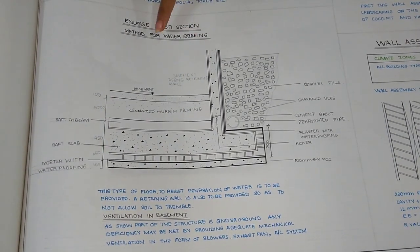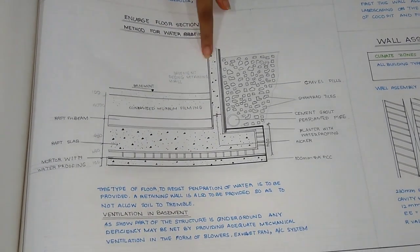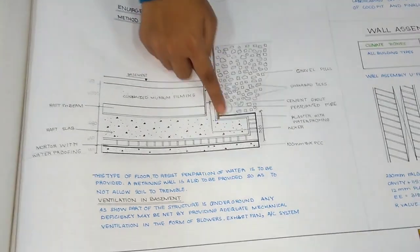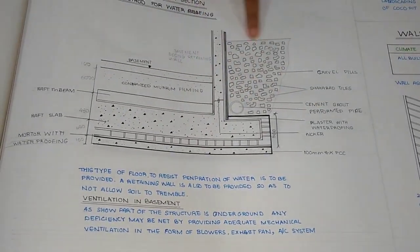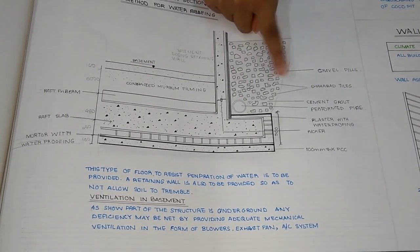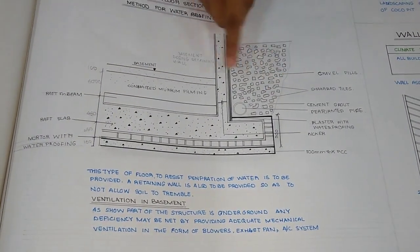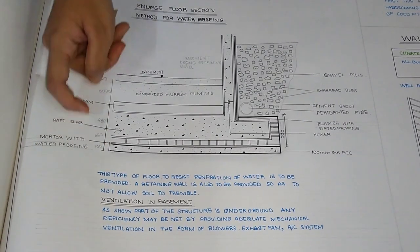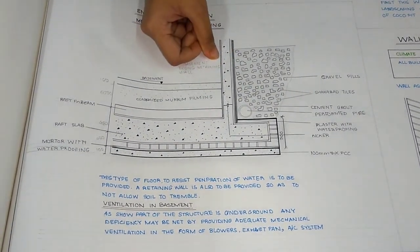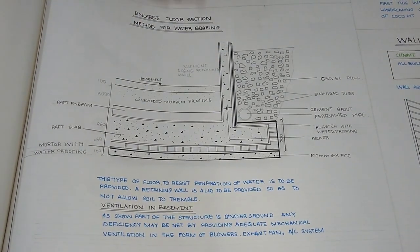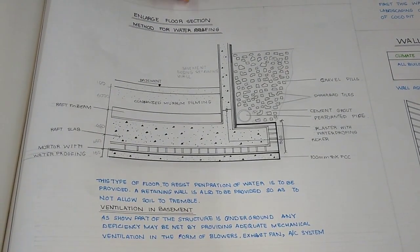As you can see, my structure is partially underground. So I have used this kind of a system where the drainage pipes are here which will let the drain water to come out from here and the thickness of this slab is 450. Waterproofing has been given both inside and outside to keep it more secure from dampness.